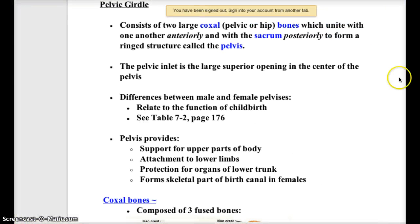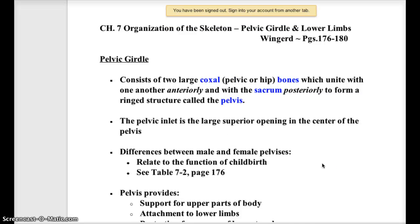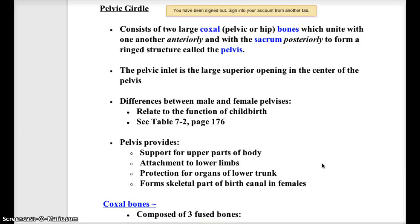Back to our notes on the pelvic girdle. In your notes and the outline you have, you have the updated version for our Mariab text. These refer to the textbook by Wingert, but we are actually in chapter 5, 9th edition of Mariab's anatomy text. So we start with the pelvic girdle — the fact that it's made of two large coxal bones, also called hip bones. They unite in front and also posteriorly with the sacrum, and that whole ring is called a pelvis. The pelvic inlet is a large superior opening. We'll also have a discussion about the differences between male and female pelvises, and we'll take a look at our classroom skeleton to decide if it's male or female just by looking at the pelvis.